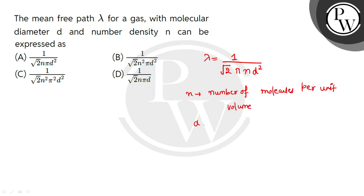And d is the diameter of molecules. So our lambda formula is the mean free path - this is the formula which we can see